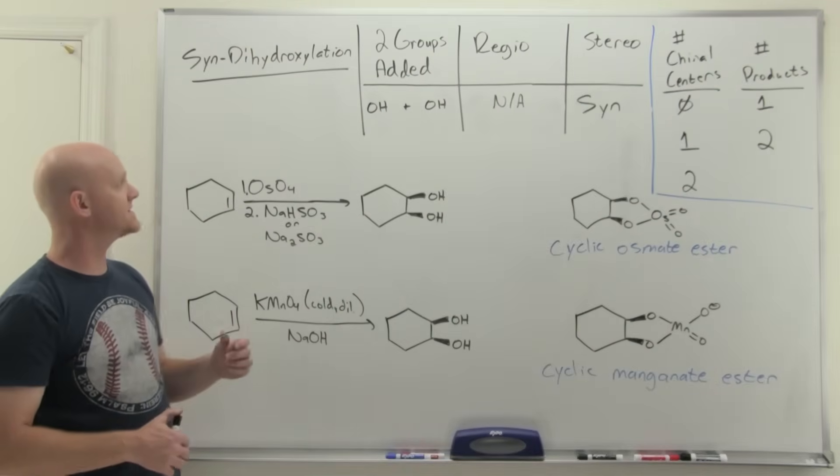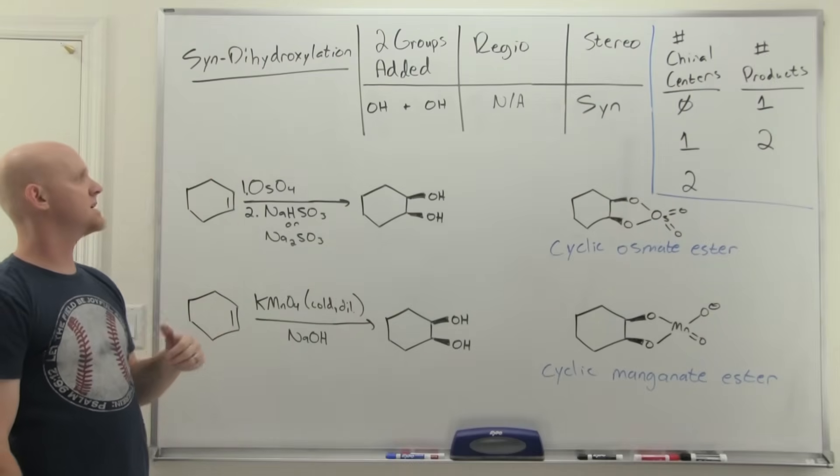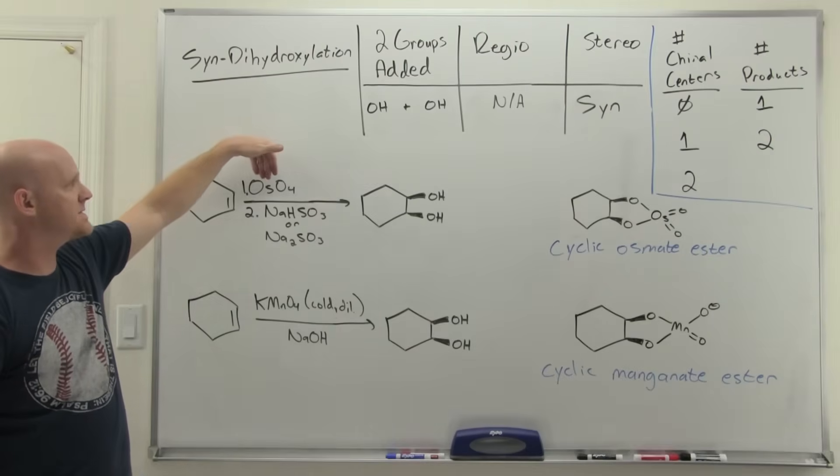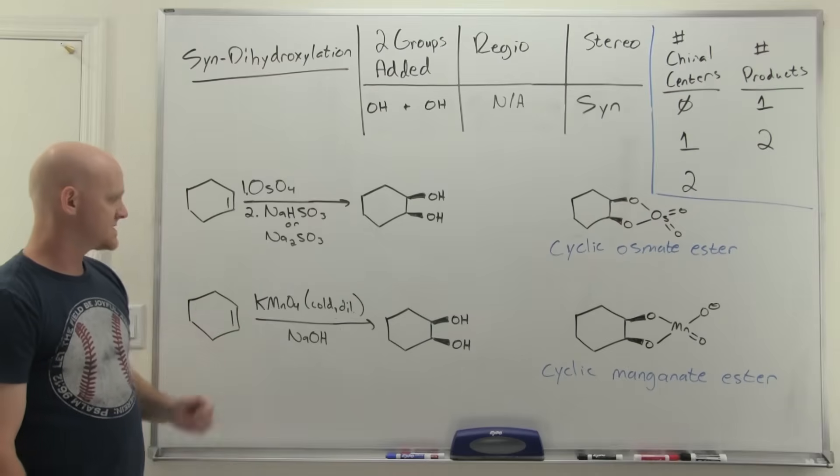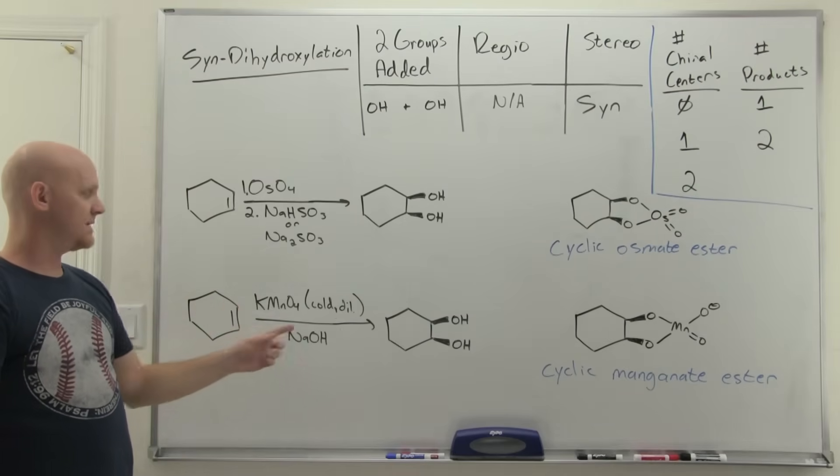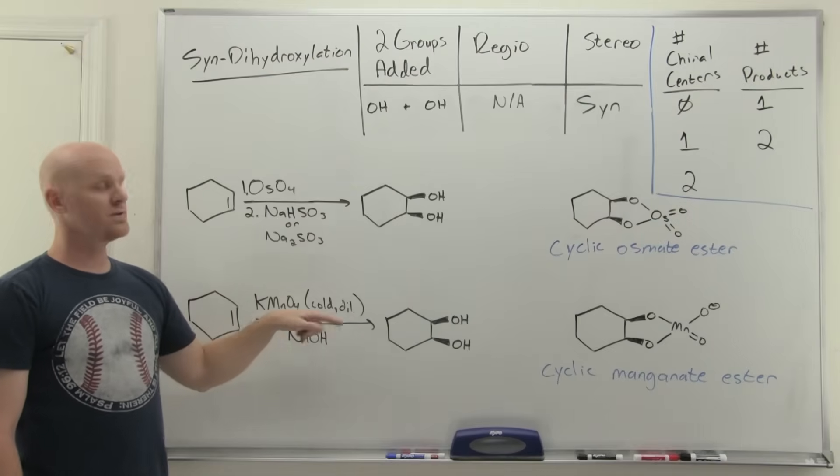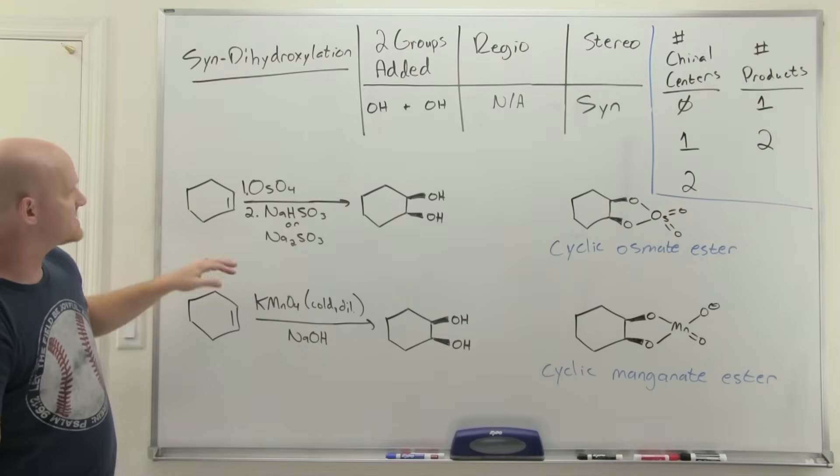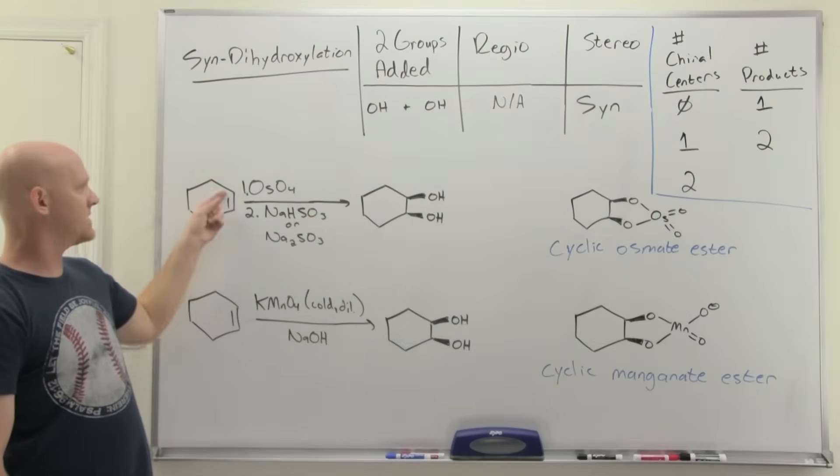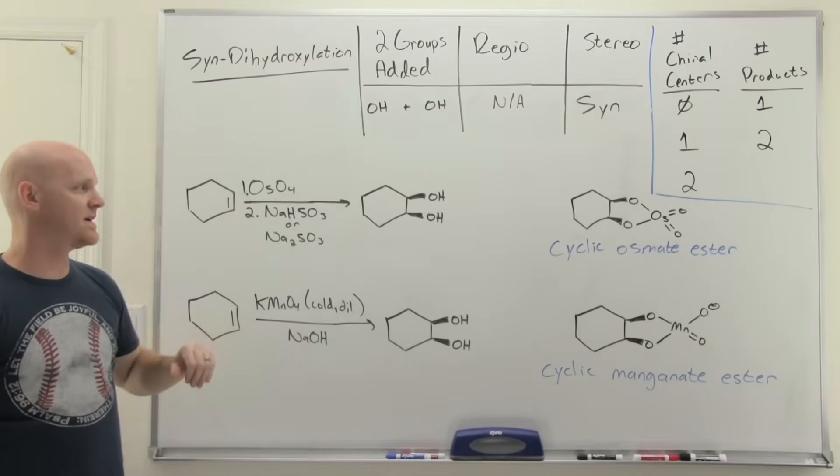The last of our alkene addition reactions here is going to be syn-dihydroxylation. We actually have two different sets of reagents that can pull this off. We've got osmium tetroxide followed by either sodium bisulfite or sodium sulfite, or potassium permanganate, and we say cold and dilute under basic conditions. The reason we have to say cold and dilute is because if it's hot and concentrated, it actually does a different reaction. In this case, we add two OHs across the alkene, so dihydroxylation. But this time, notice they're on the same side. They add to the same face.